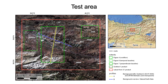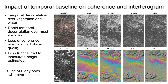Furthermore, a literature review has been conducted. This figure shows the decrease of coherence for Sentinel-1 image pairs of increasing temporal baseline. The rapid decorrelation over most surfaces leads to phase noise and less pronounced fringes.